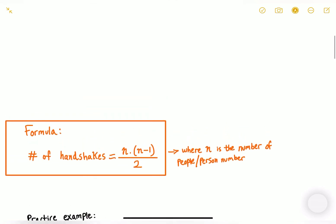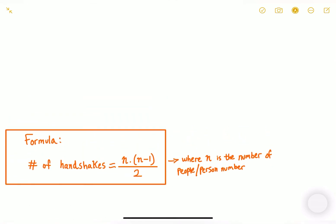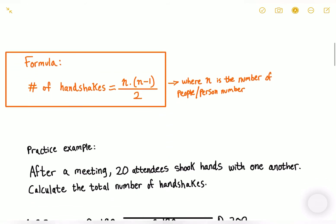The formula is: the number of handshakes equals n (the number of people) multiplied by n minus one, all divided by two. So let's see this formula in action.